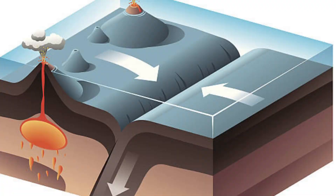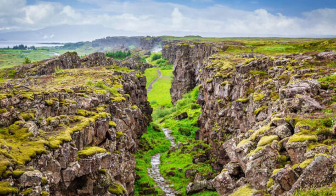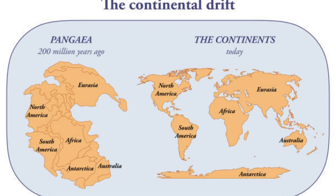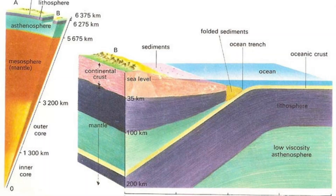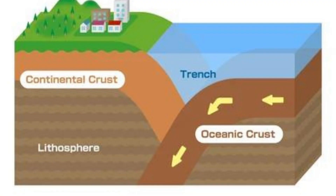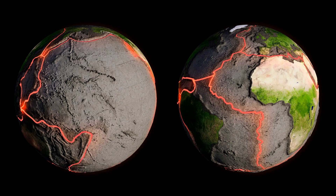Plates can make horizontal movements, thus moving away from neighboring plates — divergent plate boundaries — or colliding with other plates — convergent plate boundaries. They can also simply slide past each other at transform boundaries. Here we speak of transform effects.